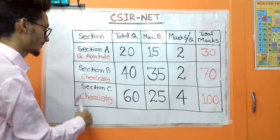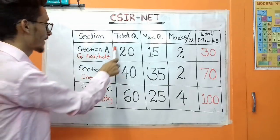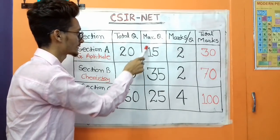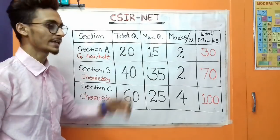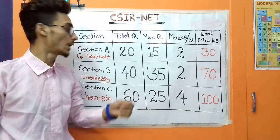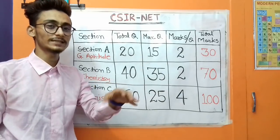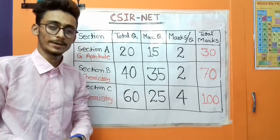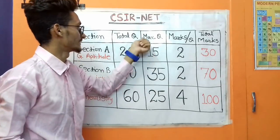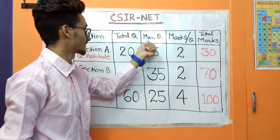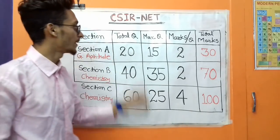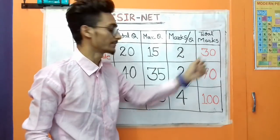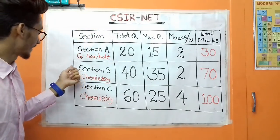Section A comes with 20 total questions, of which the maximum questions counted is 15. What this means is: if you are able to solve 18 questions out of 20, only the first 15 questions are taken into account for your marks — the other three questions are neglected, even if they are correct. So 15 is the maximum questions for Section A, and each correct question gives 2 marks, so the total you can achieve from Section A is 30 marks.